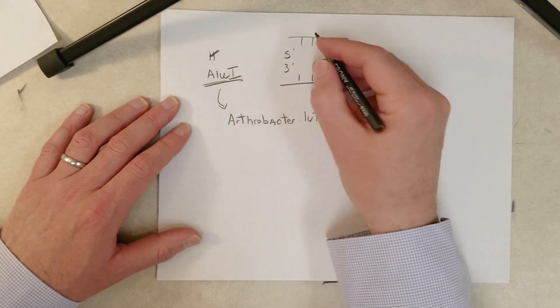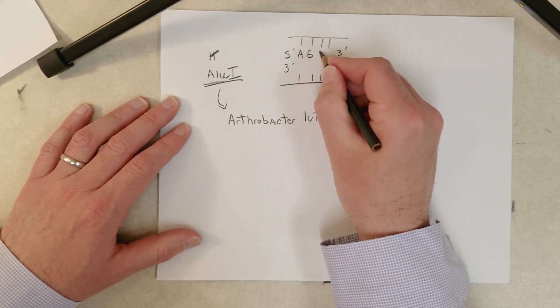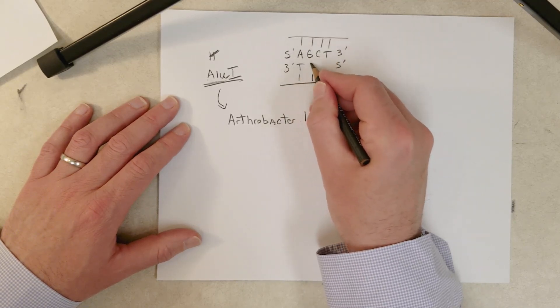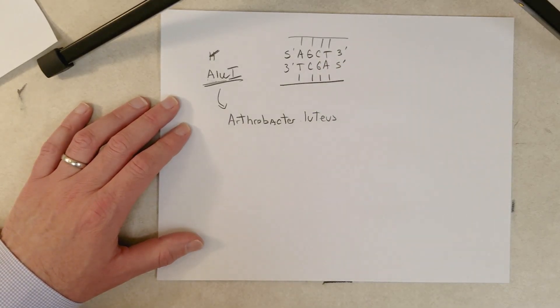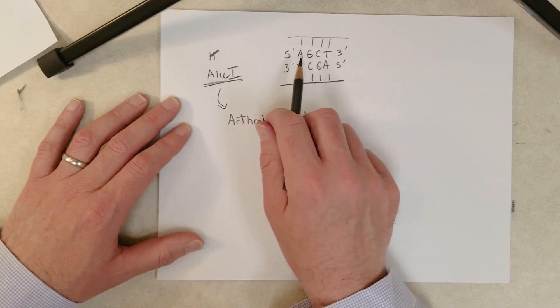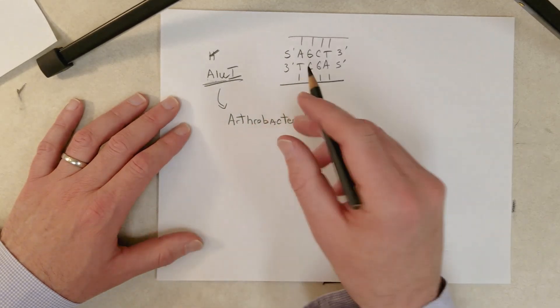So AluI cuts, and sometimes we use the word digests instead of cuts. So digests the sequence AGCT. So unlike HindIII, which cuts a six base pair sequence, and the sequence has to be very precise, has to be that exact sequence for HindIII to bind the DNA, AluI binds a four base sequence, and it has to be this specific sequence in order for AluI to bind it and cut it.